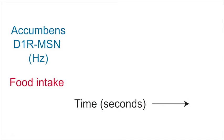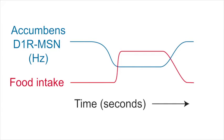We found that most D1-MSNs in the accumbens cell reduced their activity during food intake and increased their activity at the end of feeding.